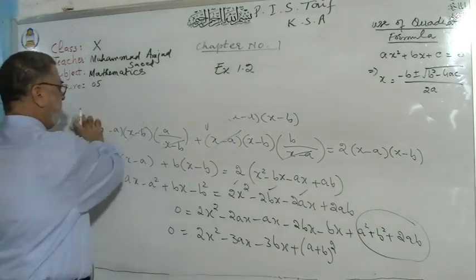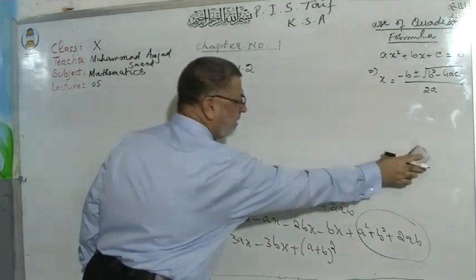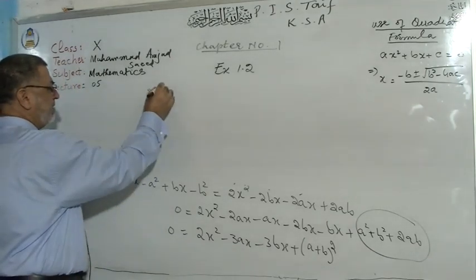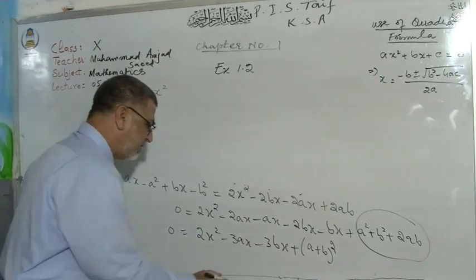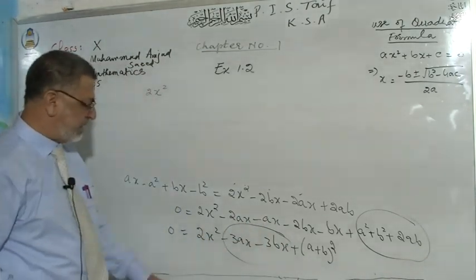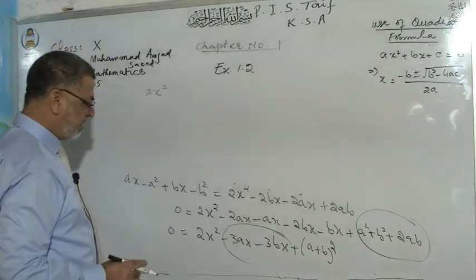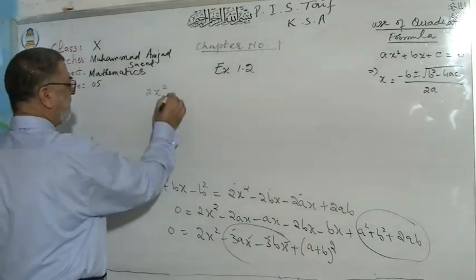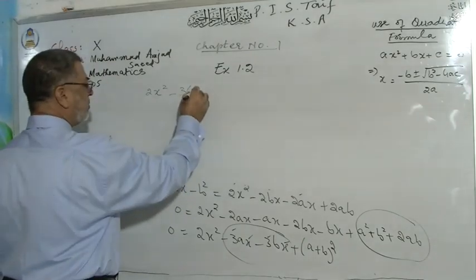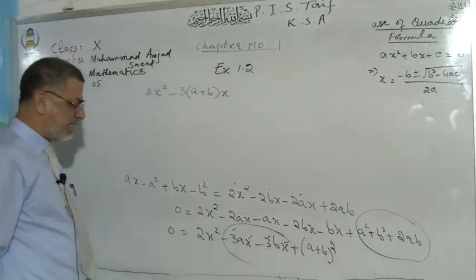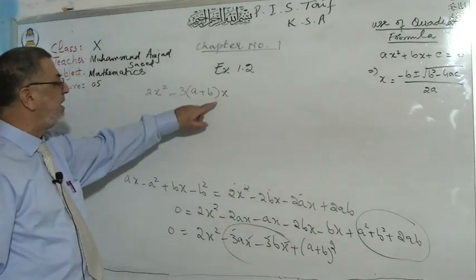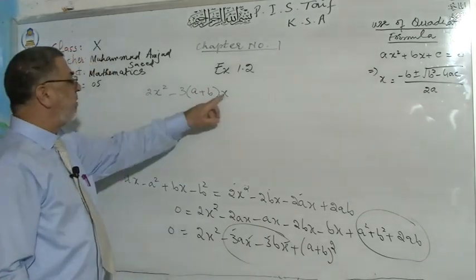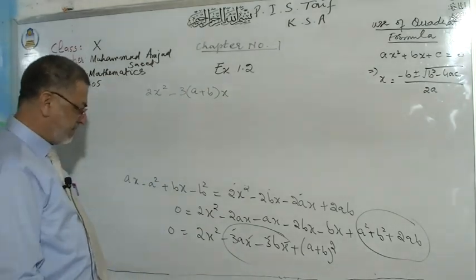We will write this in the proper shape of standard quadratic equation and then apply the quadratic formula. We have 2x² minus 3(a+b)x plus (a+b)². You can take −3 common from both x terms, giving −3(a+b)x. Writing x at the end helps identify the coefficient of x more clearly.